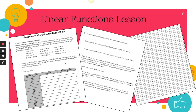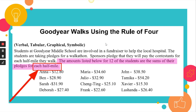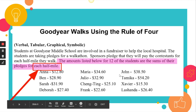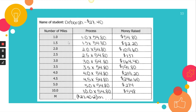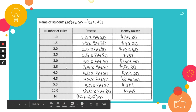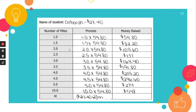Here's just a glance at this lesson. The one thing I'd like to bring your attention to is that when students go to choose a student and do their work, the thing that gets skipped or missed the most is this last sentence in the instructions: the amounts listed below for the 12 students are the sums of their pledges for each half mile. When looking at the table, make sure students pay attention to the fact that these are in miles, but those pledges are for half miles — so they'll need to double those pledges in order to make the equation work.